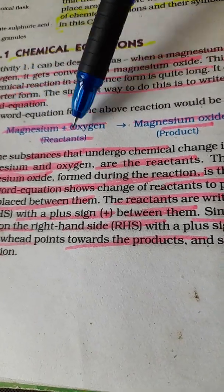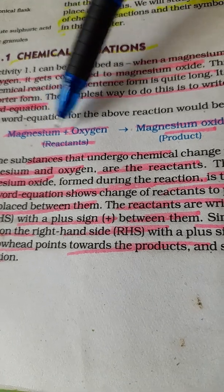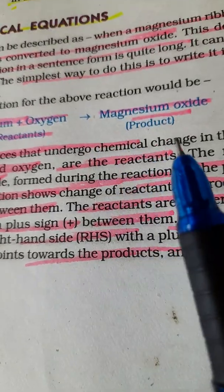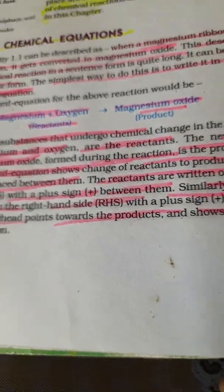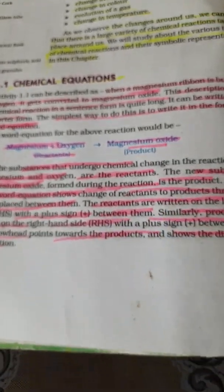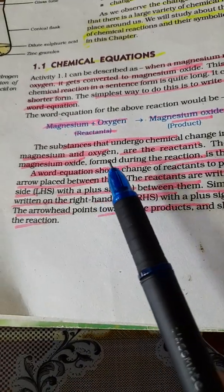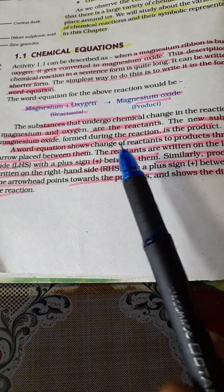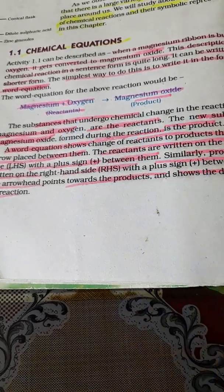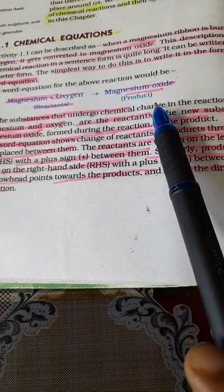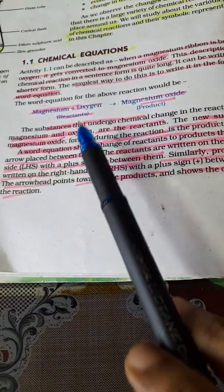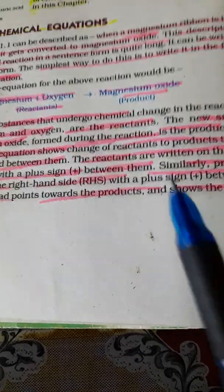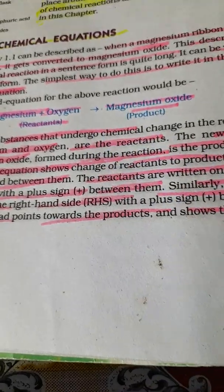The substances which undergo chemical change are magnesium and oxygen. You put an arrow and on the right side write the product which is magnesium oxide. On the left side of the arrow you write the reactants and connect each reactant with a plus sign, and write the product on the right hand side. The arrow shows the direction in which the reaction is taking place.